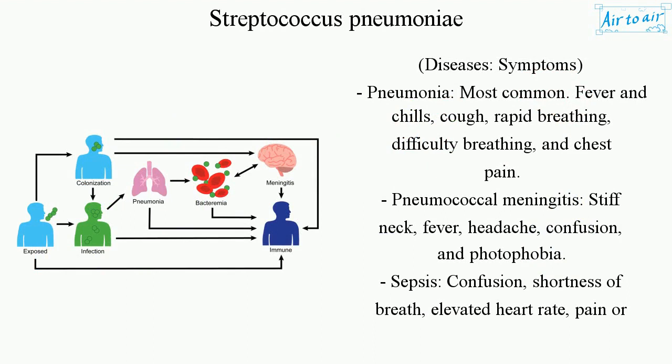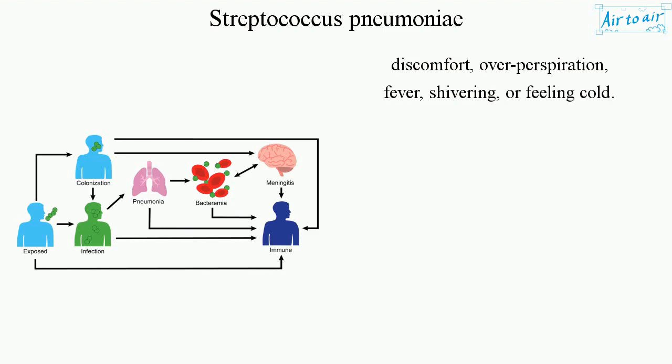Pneumococcal meningitis symptoms include stiff neck, fever, headache, confusion, and photophobia. Sepsis symptoms include confusion, shortness of breath, elevated heart rate, pain or discomfort, overperspiration, fever, shivering, or feeling cold.